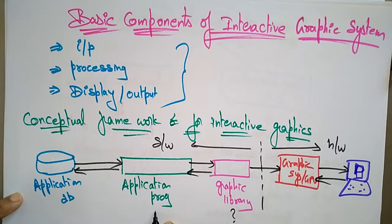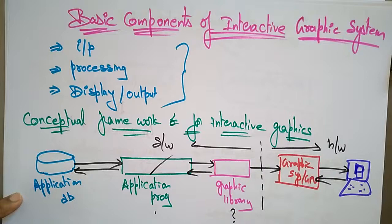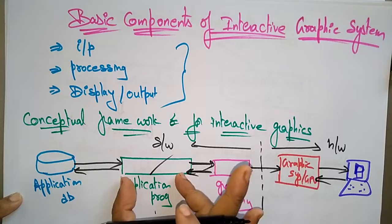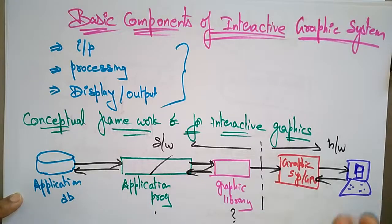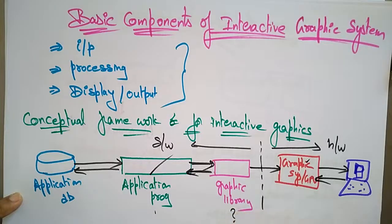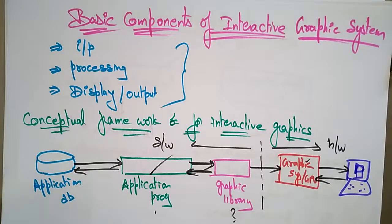The application program maps all application objects to images by invoking the graphics library. That's why it is a two-way communication. Whatever the graphic system that is present between the display unit and the graphic library, it acts as an interface that interacts between the graphics and the hardware part. So this is the conceptual framework for interactive graphics. Thank you.